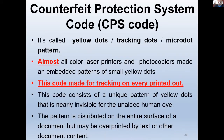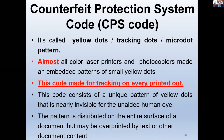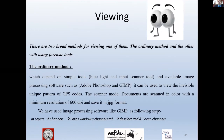Let's give a short overview about the counterfeit protection system code, also called yellow dots or tracking dots. Almost all color laser printers and photocopiers embed patterns of small yellow dots. This code is made for tracking on every printout. It consists of a unique pattern of yellow dots that is nearly invisible to the unaided human eye. The pattern is distributed across the entire surface of the document but may be overprinted by text or other document content.